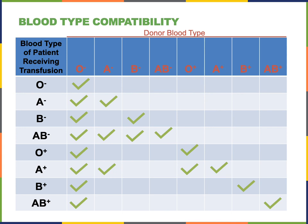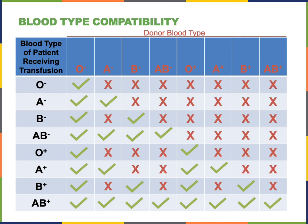A patient with B positive blood could safely receive a transfusion of O negative, B negative, O positive, or B positive blood; however, if they were to receive the A antigen, that would cause a transfusion reaction. A patient with AB positive blood could receive any of these blood types safely, so AB positive is what we call the universal recipient, in contrast to the O negative blood type, which is the universal donor. Here all of the incompatible combinations that would create a transfusion reaction are shown with red X's, and the green check marks show all of the safe combinations for transfusion.